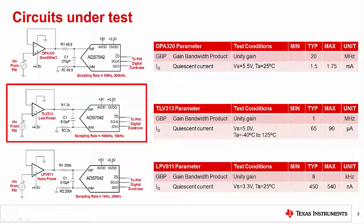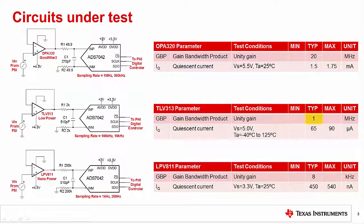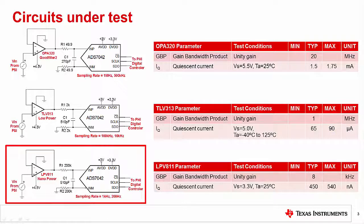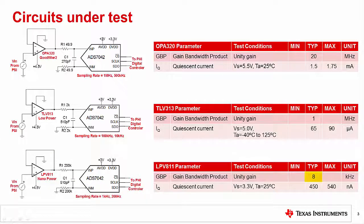Next, we will use the OPA313 for sampling rates of 100 kS/s and 10 kS/s. This amplifier has a bandwidth of 1 MHz and a maximum quiescent current of 90 µA. Finally, we will use the LPV811 for sampling rates of 1 kS/s and 200 samples per second. This amplifier has a bandwidth of 8 kHz and a maximum quiescent current of 540 nA. In the next slide, we will use this information to calculate the system power.